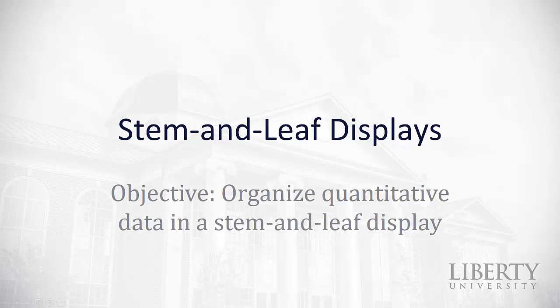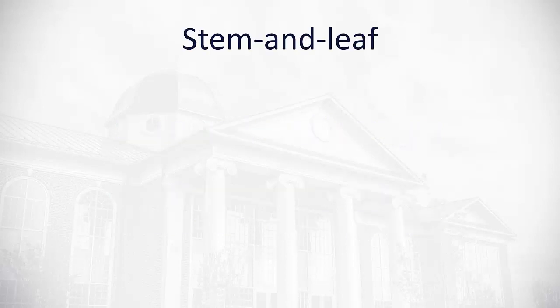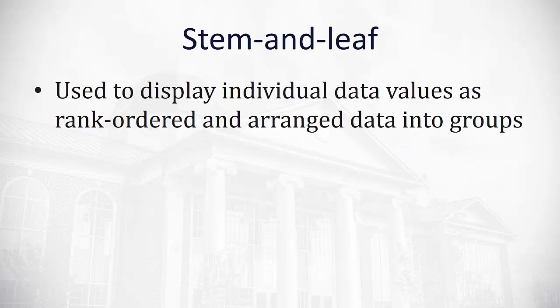One way we can organize quantitative data is in what's called a stem and leaf display. What a stem and leaf display does is it is used to display individual data values as rank ordered and arranged into groups.